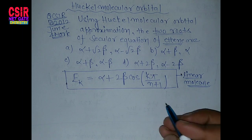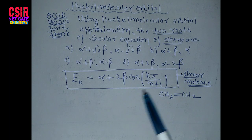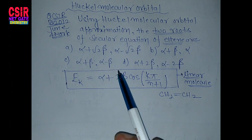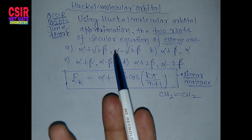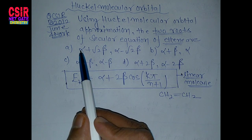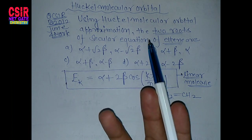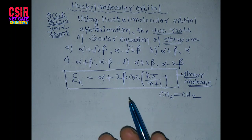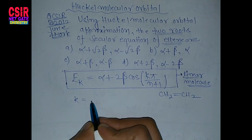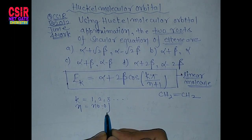We have been given ethene, which is CH₂=CH₂, and it is a linear molecule, so this formula will be applicable. You must be wondering what alpha and beta are — alpha is known as the Coulomb integral and beta is known as the resonance integral. The k value is a natural number 1, 2, 3 and so on, and n is the number of carbon atoms.